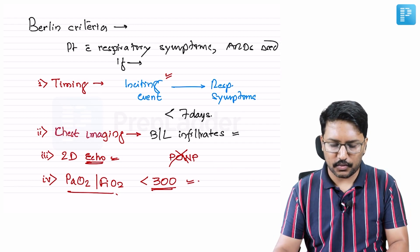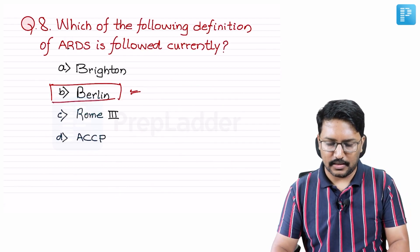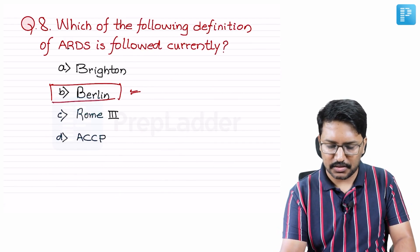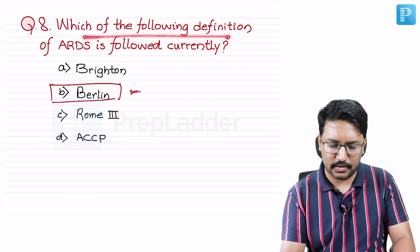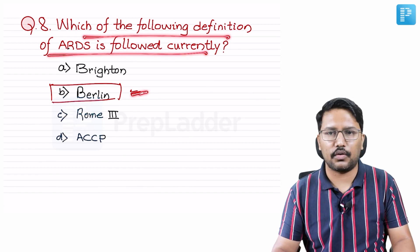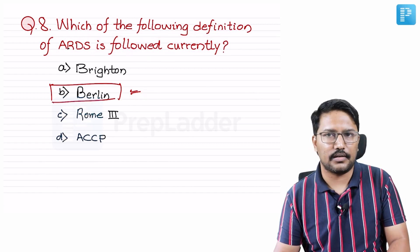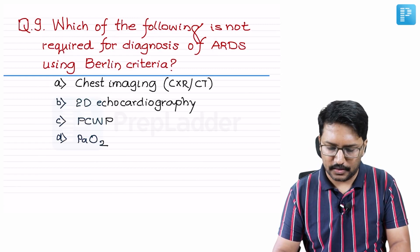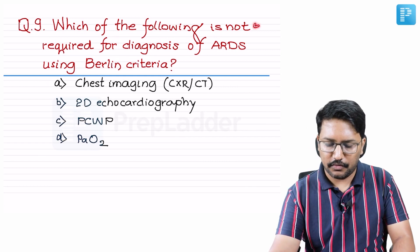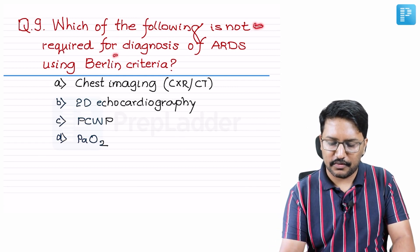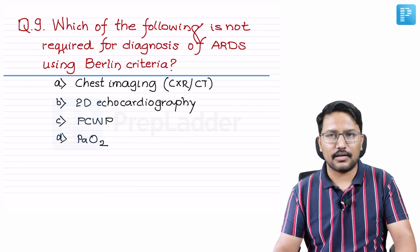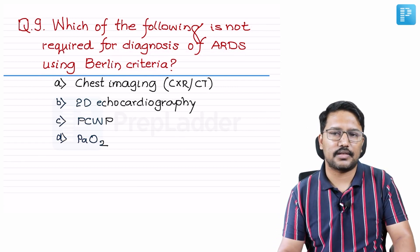Going back to the question: which definition of ARDS is currently followed? Yes, we are following the Berlin criteria. Now moving to question nine: which of the following is NOT required for diagnosis of ARDS using the Berlin criteria? This makes quite good sense.